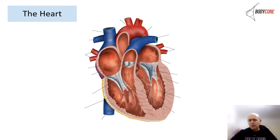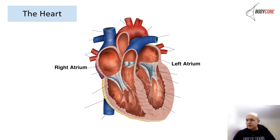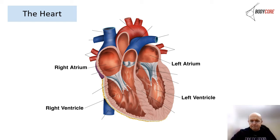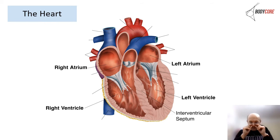Looking at the heart itself in more detail. We have the right atrium and left atrium — the receiving chambers. The left side collects oxygenated blood coming from the lungs, and the right side receives deoxygenated blood going back to the lungs. We've got the right ventricle and left ventricle, where blood gets ejected out of the heart through a strong contraction. The interventricular septum separates the ventricles — 'septum' means separation, like the septum separating your nostrils.